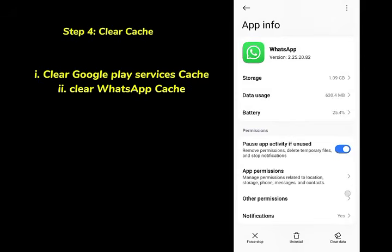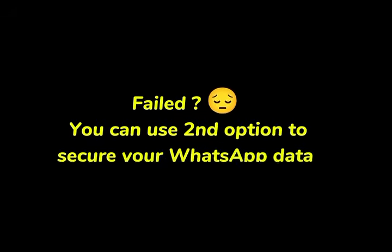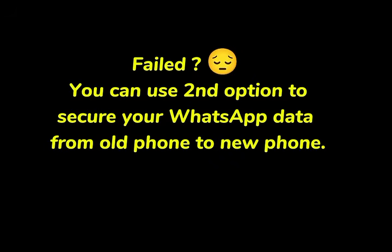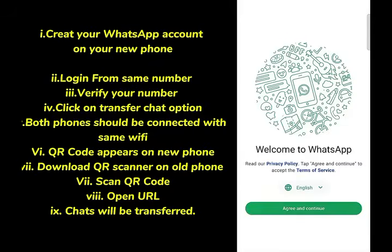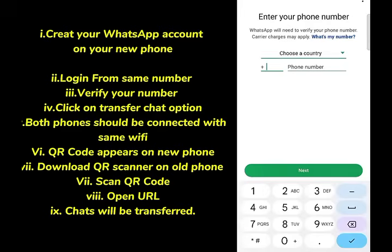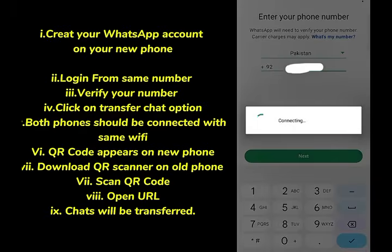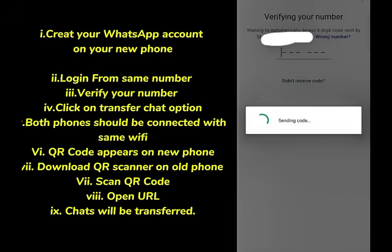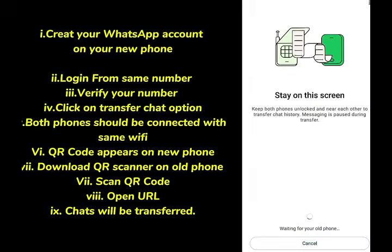If you don't have a backup and you are changing your phone, don't worry — you won't lose your data. The second option is to transfer your chats to your new phone directly. Simply use the same phone number on your new phone. When you set up WhatsApp, you will see the 'Transfer Chat' option — simply click on that.